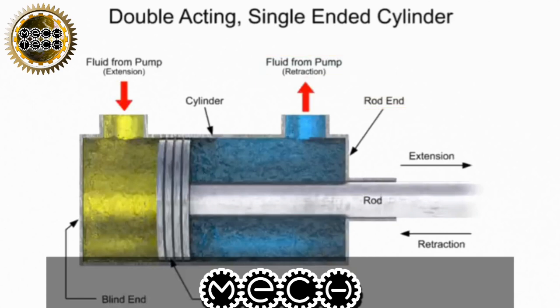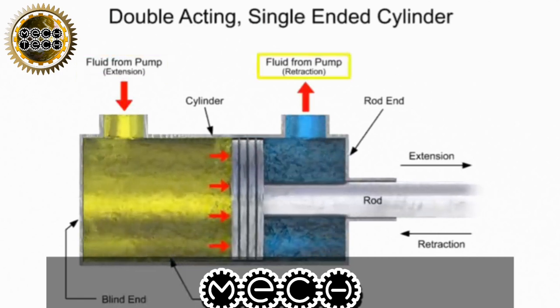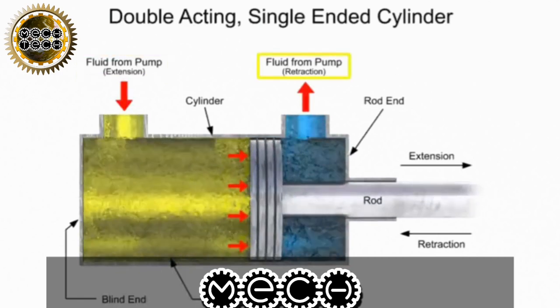A directional control valve sends fluid through the blind end port while venting fluid out the rod end port back to the tank. Pressure builds up and generates a force on the piston, causing the extension stroke.